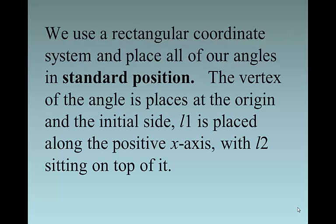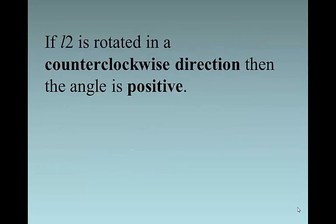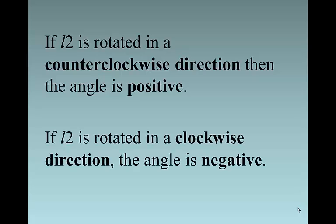We use a rectangular coordinate system, the Cartesian plane, and place all of our angles in what's called standard position. Since they are all in standard position, we really don't have to talk about it that much, but we still will. The vertex of the angle is placed at the origin, and the initial side L1 is placed along the positive x-axis and it doesn't move, and then L2 is sitting on top of it. If L2 is rotated counterclockwise, then the angle is positive. If L2 is rotated clockwise, then the angle is considered a negative angle.